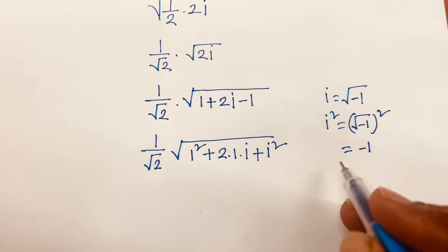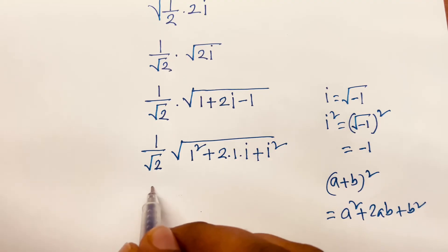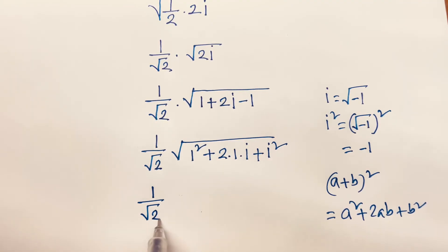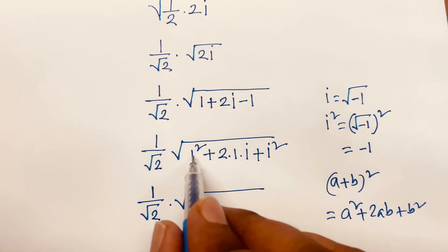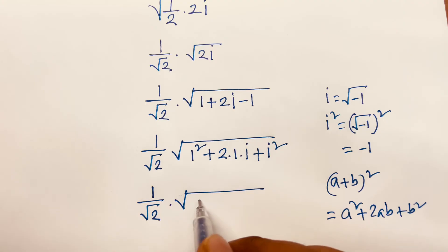Then, we know that a plus b whole square equals a square plus 2ab plus b square. If I follow this rule, this time I can say here is 1 over square root 2 times square root. So, I can say here is 1 plus i whole square.